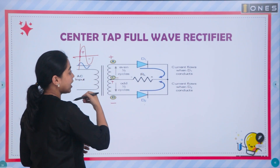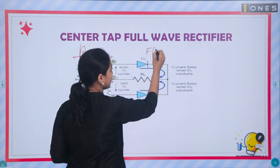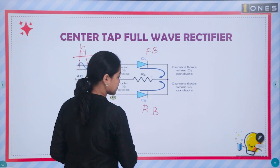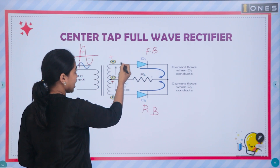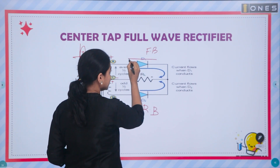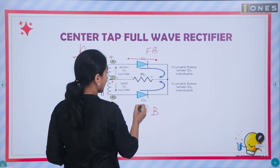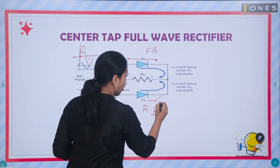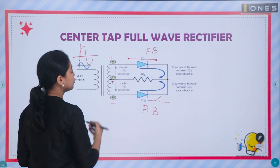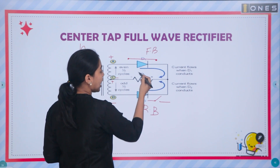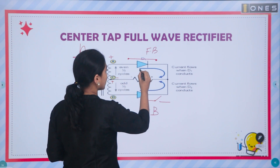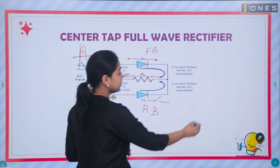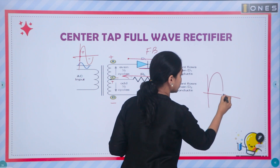Where is the conduction? If we consider the positive half cycle, D1 will be forward biased — it acts as a closed switch. D2 is reverse biased — it is an open switch. If we consider the current flow through the load RL, we have output. This is the direction of current flow. On the output side, positive half cycle content is obtained.